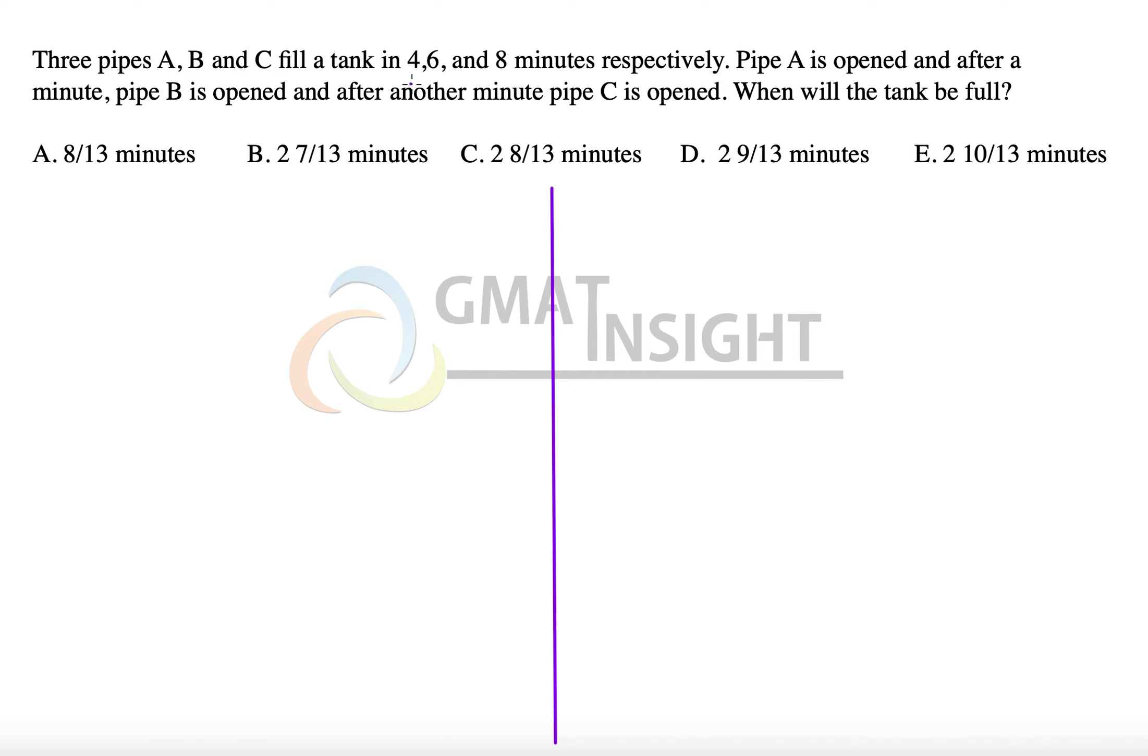Now we have three pipes A, B, and C. They can fill in 4, 6, 8 minutes. That means A's rate is 1/4 in one minute. B's rate is 1/6. C's rate is 1/8 in one minute.